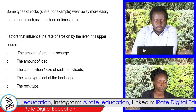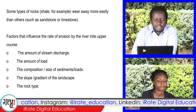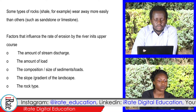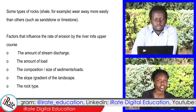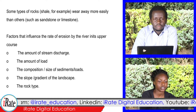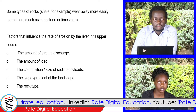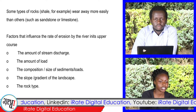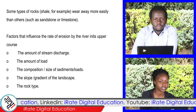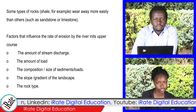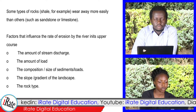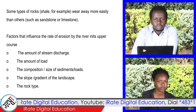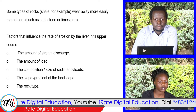Factors that influence the rate of erosion by the river in its upper course: one, the amount of stream discharge; two, the amount of load; three, the composition or size of sediments or loads; four, the slope or gradient of the landscape; five, the rock type.